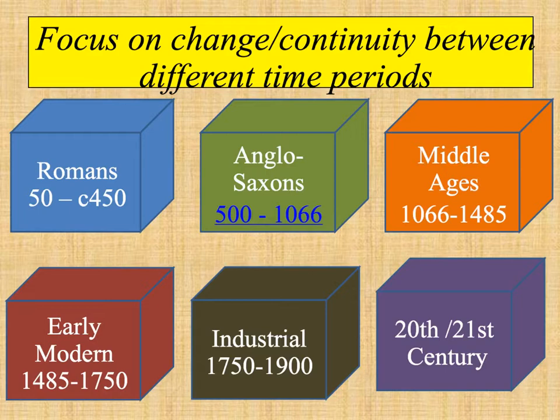To work out what century an event happened in, you need to take the first two numbers and then add one. Or if it's just a three-digit number, take the first number and add one. So for example, the year 750 is in the 8th century, whereas 1066 happened in the 11th century. The year 1767 would be in the 18th century, and 1829 was in the 19th century.